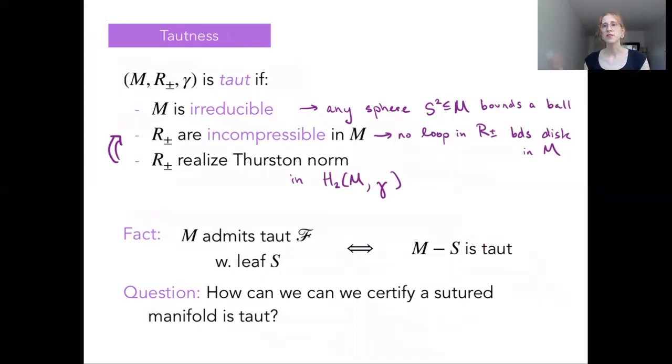We're saying we want M to be irreducible. We want any sphere in our three manifolds to actually bound a ball. This is the basic way of factoring a three manifold, splitting it up into the core pieces that contain the essential topological information. Second, we want to know that these boundary subsurfaces, R+ and R-, are each incompressible in the three manifold.